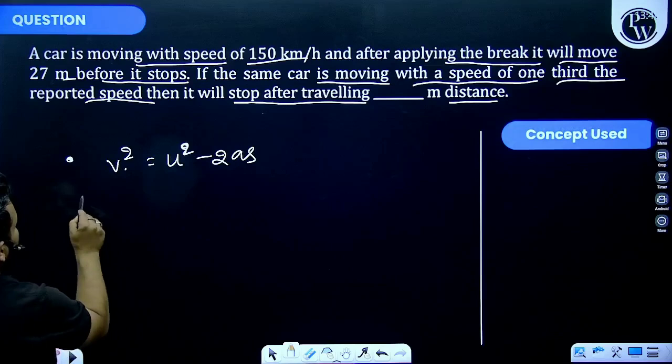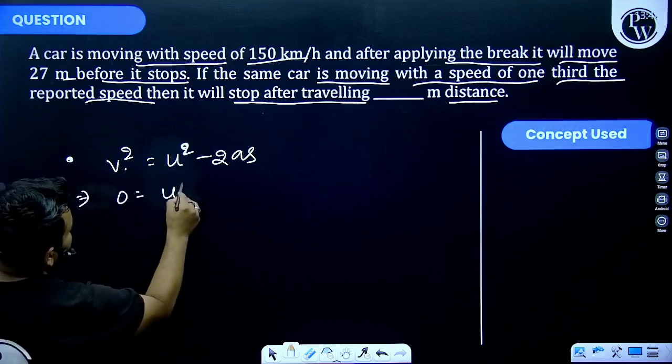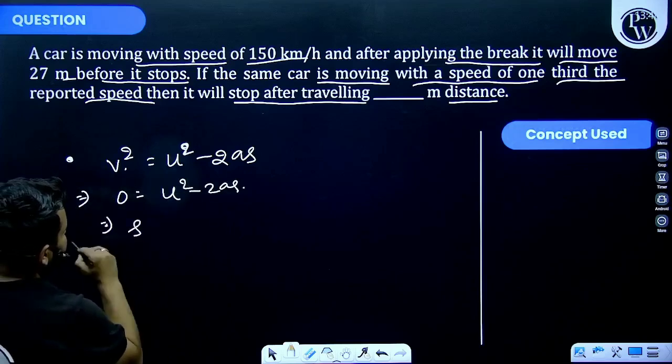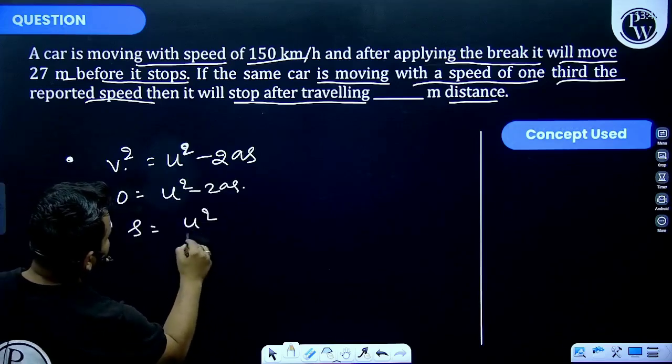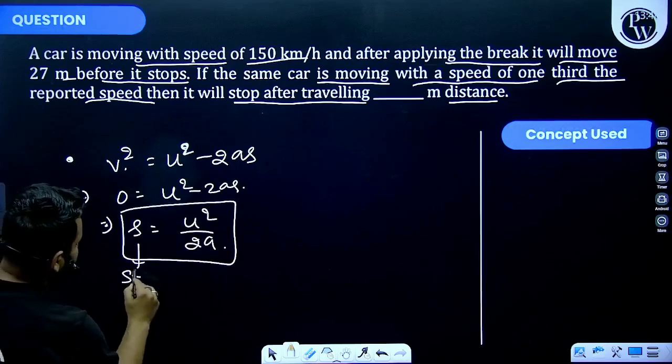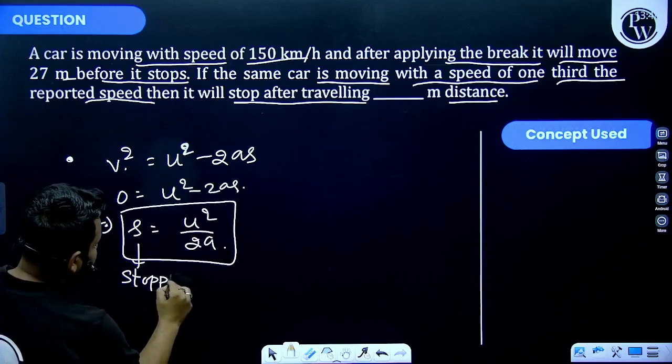So we can write 0 = u² - 2as. That implies the stopping distance s is equal to u² divided by 2a. s is the stopping distance.